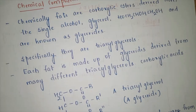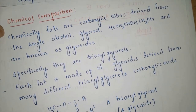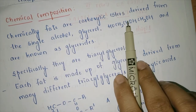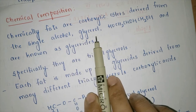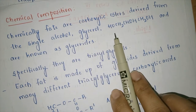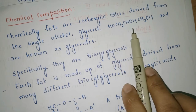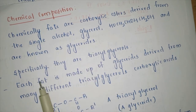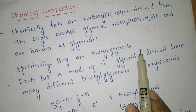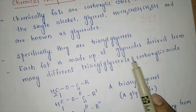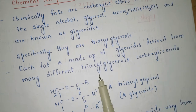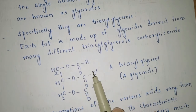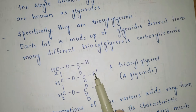Chemically, fats are carboxylic esters derived from a single alcohol — glycerol. The structure of glycerol is HOCH₂–CH(OH)–CH₂OH, and the system is known as a glyceride. Specifically, they are triacylglycerol systems. Each fat is made up of glycerides derived from many different triacylglycerols, which are also carboxylic acids.